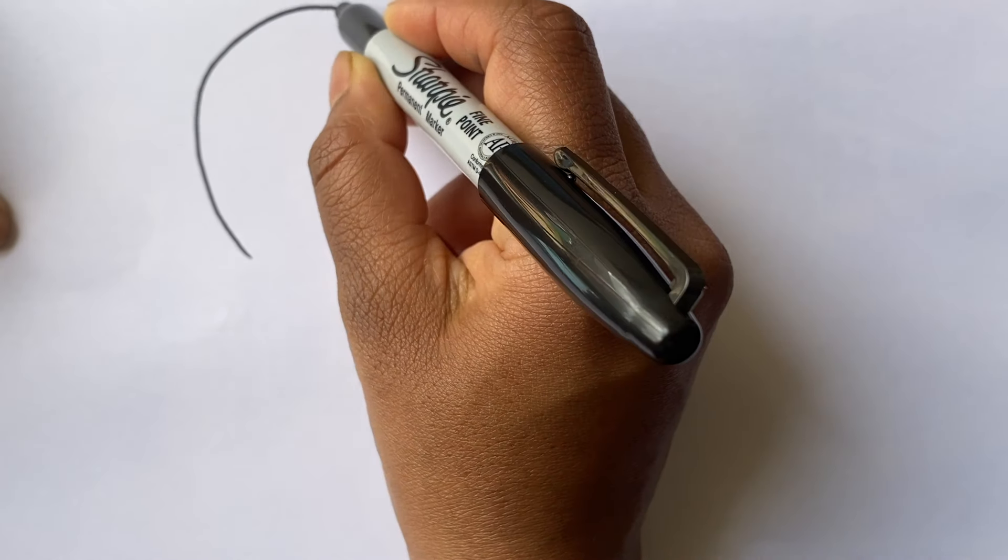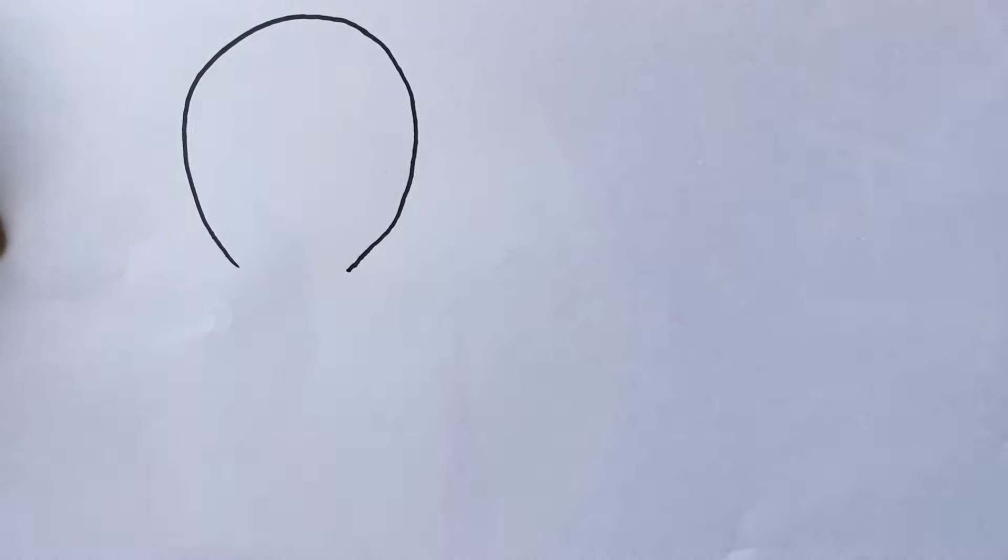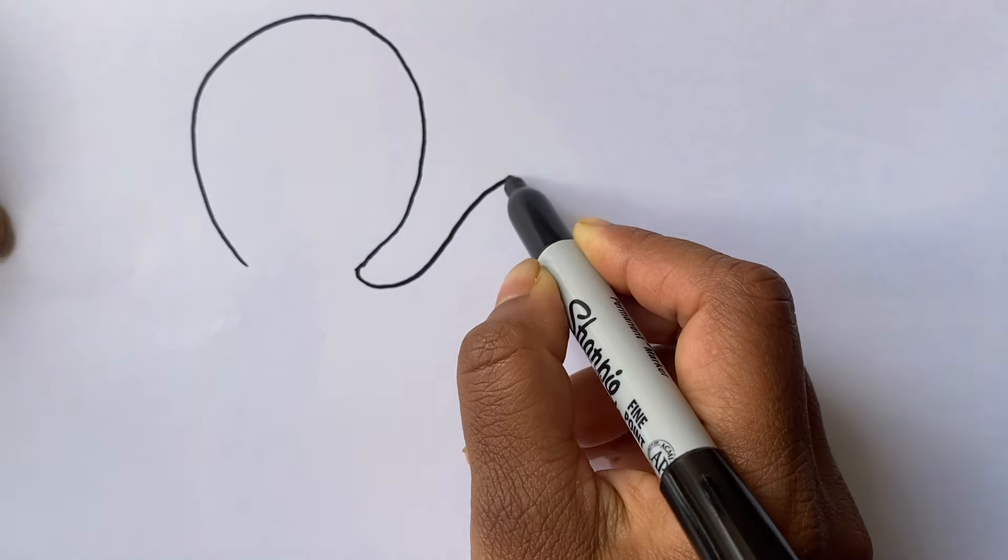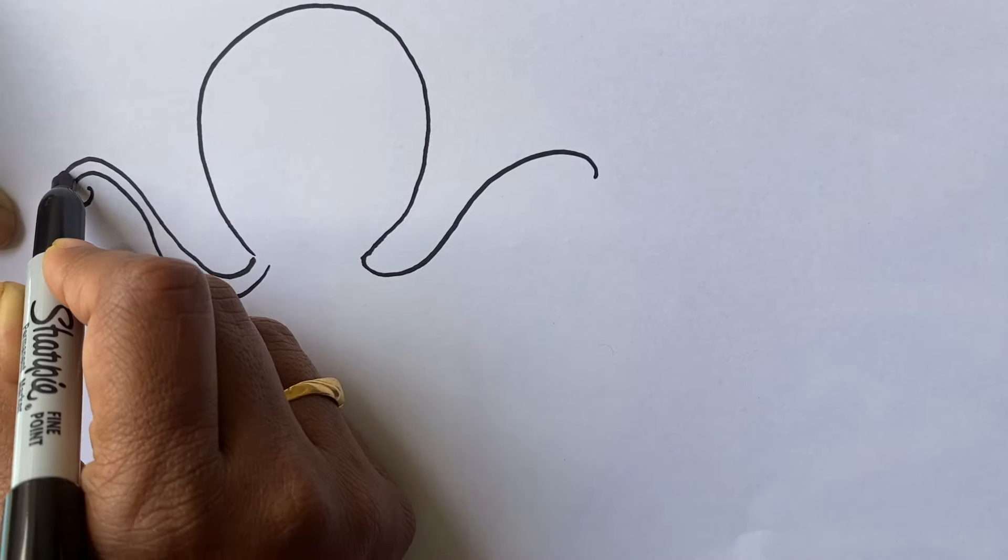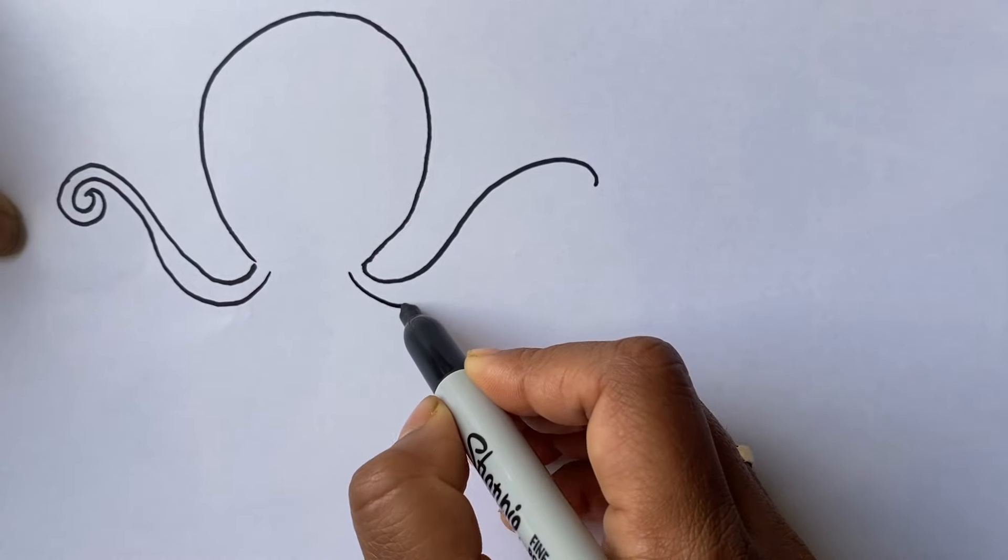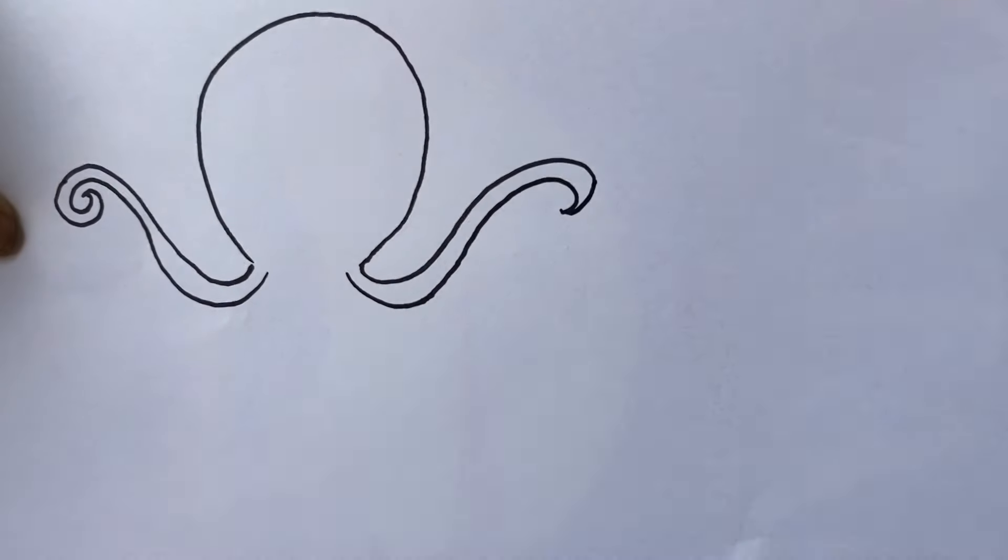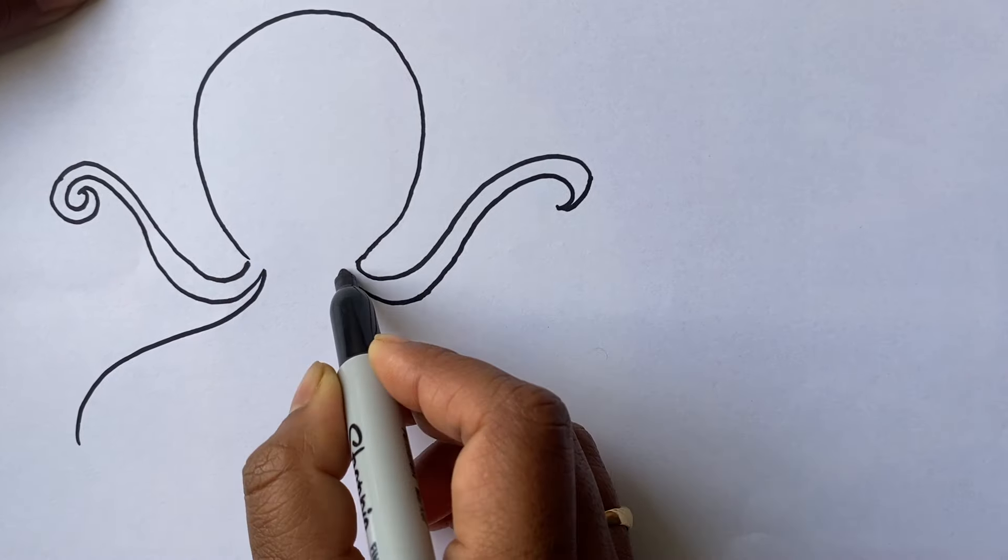Now octopus. Head, tentacles. Octopus have three hearts and blue color blood.